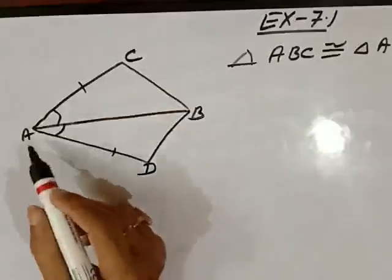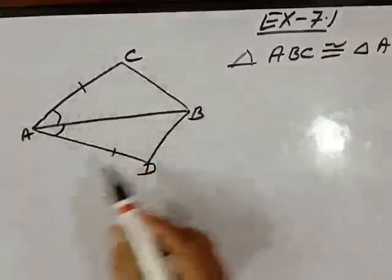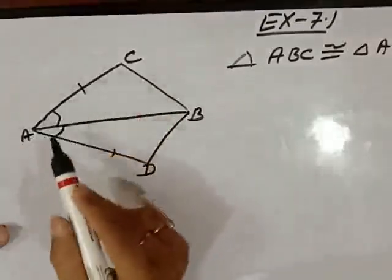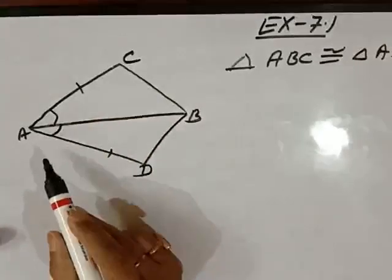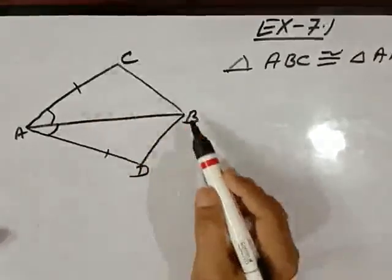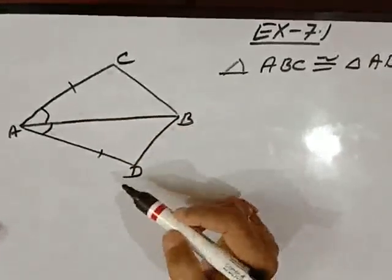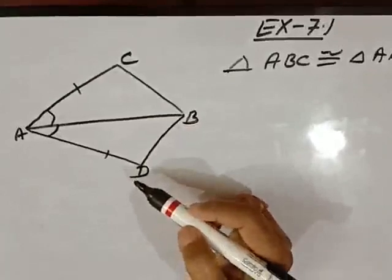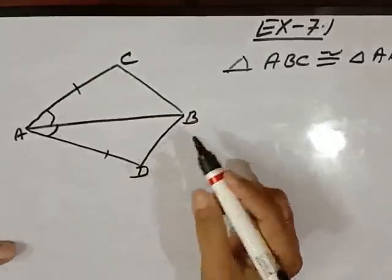So let us first prove the two triangles is congruent or not. If they will be congruent ABC and ABD then automatically BC will be equal to BD as per rule of the congruency CPCT. So let us start. First proof.